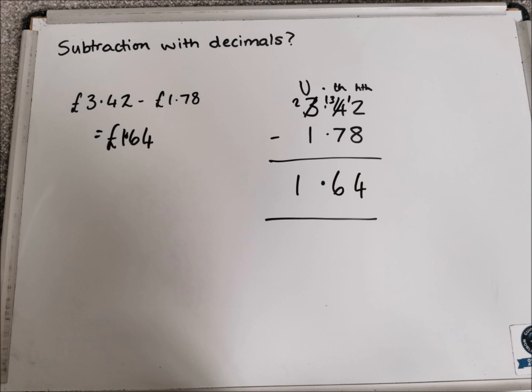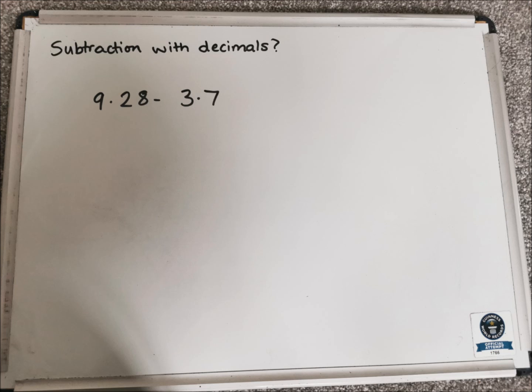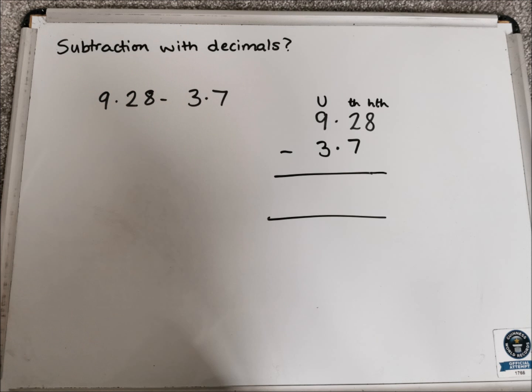A harder example would be if the numbers after the decimal point are different. So my example here, one of them has got two numbers after the decimal point, one of them has just got one number after the decimal point. So let's start off by laying it out properly, like this. So make sure you've got your decimal points on top of each other. That might help you line things up and not get your place value muddled up.